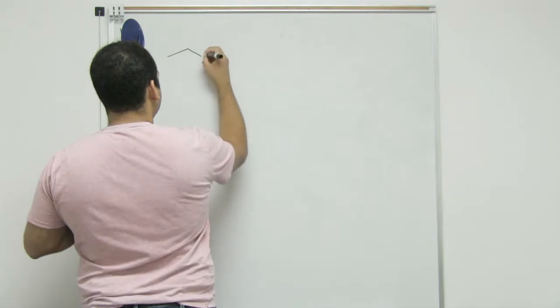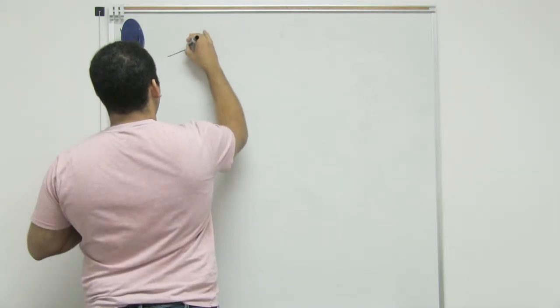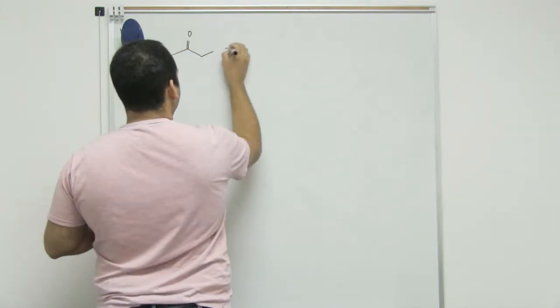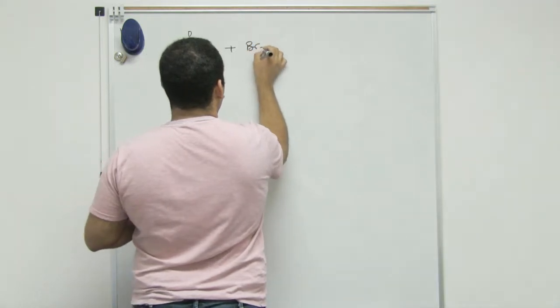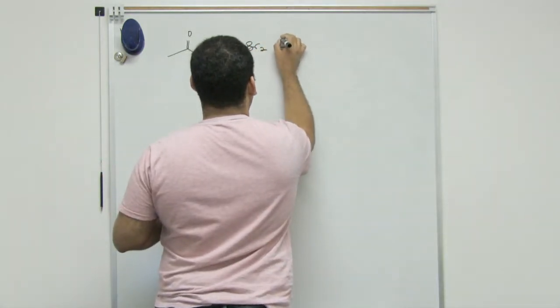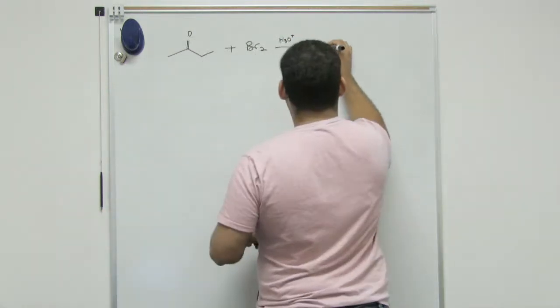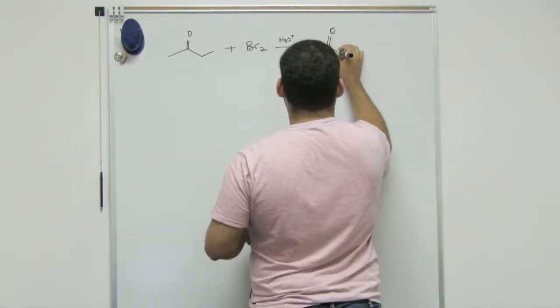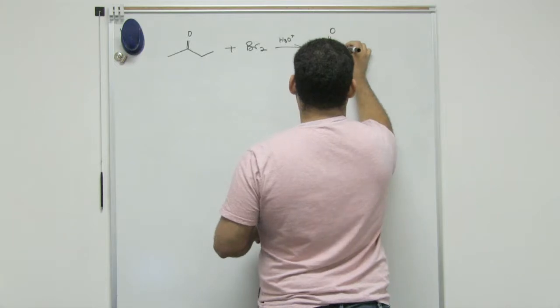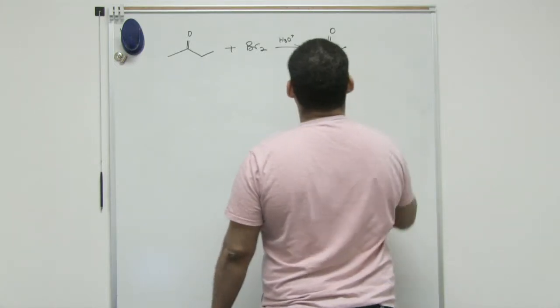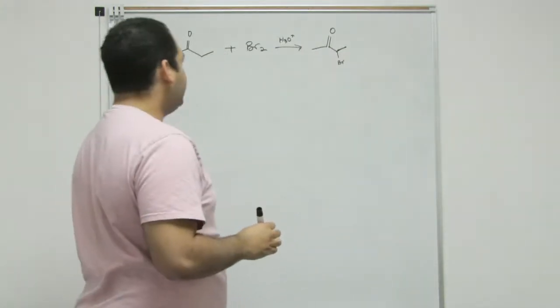Basically, we do have here a ketone and a halide under acid conditions and we add one of the halides in our alpha carbon. We replace our hydrogen for a halide.